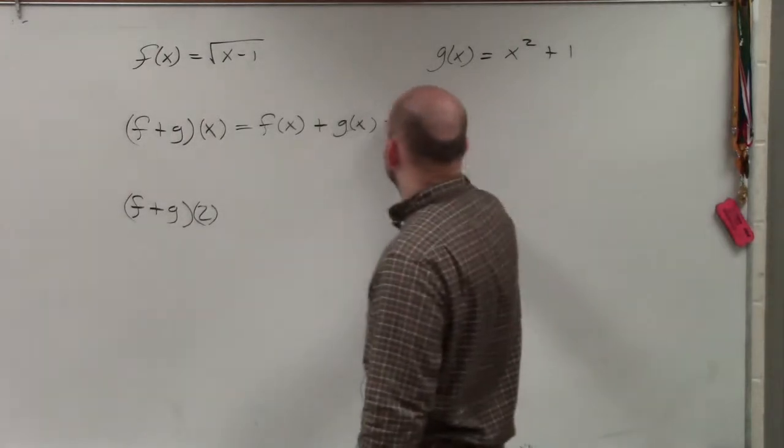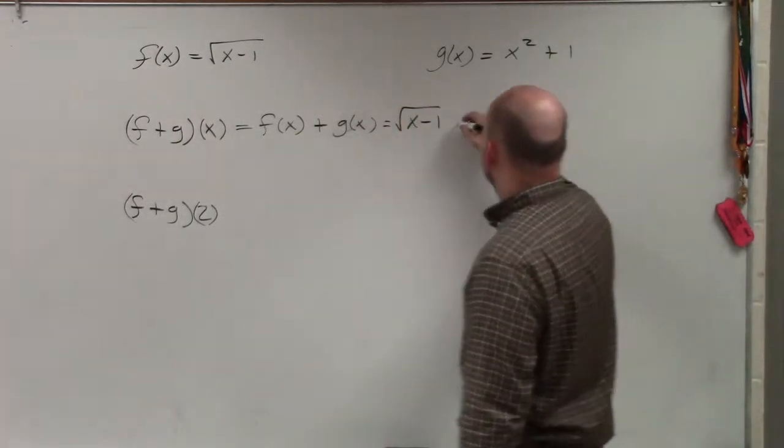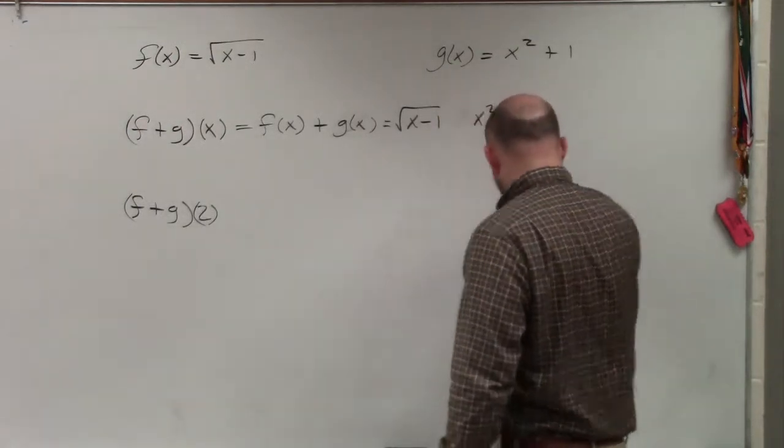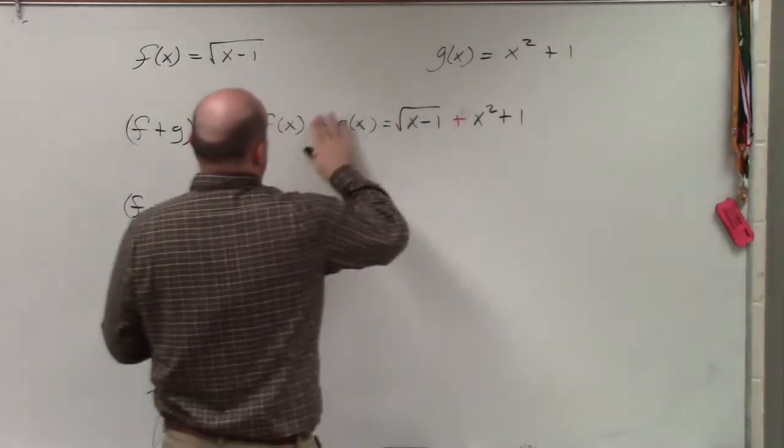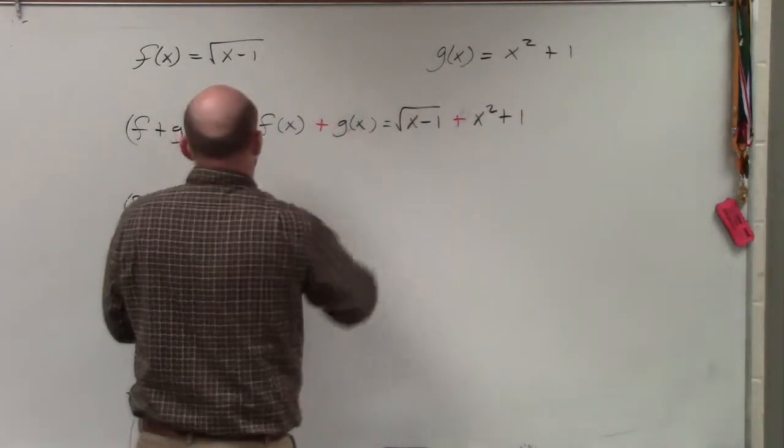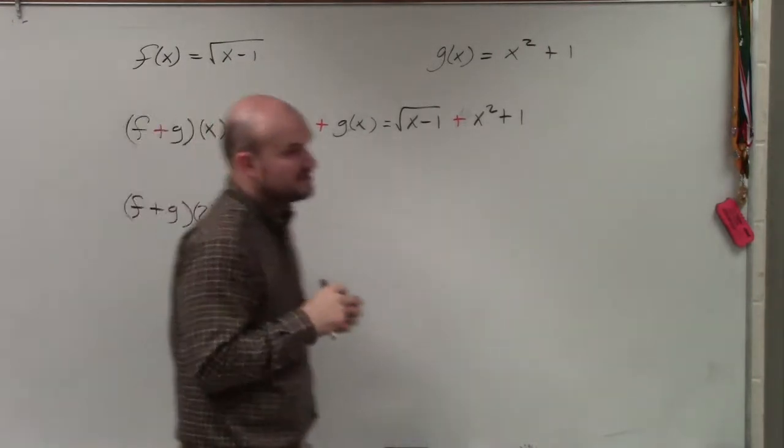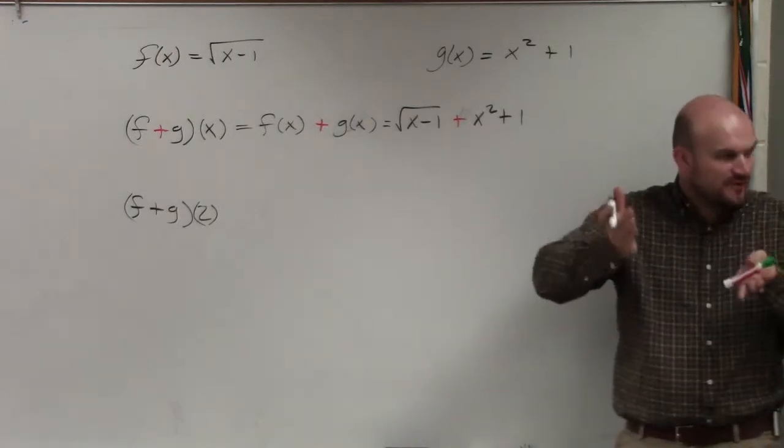So I'm basically just going to do the square root of x minus 1, which is f(x), plus x squared plus 1. Let me write it like this because I had some students get confused. Do you guys see how the red kind of separates the two functions?